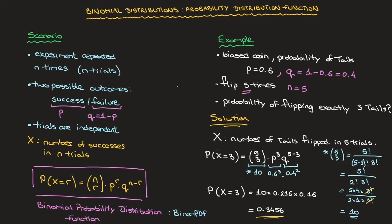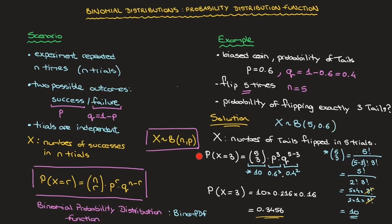To finish, once we have a discrete random variable X which follows a binomial distribution, we write X ~ B(n, p), where the tilde means 'follows a distribution' and B indicates binomial. This means X follows a binomial distribution with n trials and probability of success p. For our example, X ~ B(5, 0.6). Do make a note of this notation as it's often used in exam questions.